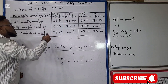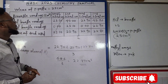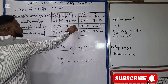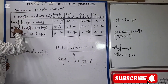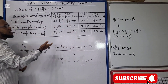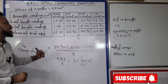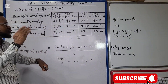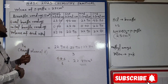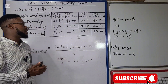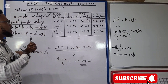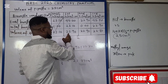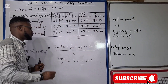For the first titration, we continue from 23.10 cm³ as the initial burette reading. The final burette reading is 45.00, so 45.00 minus 23.10 gives 22.90 cm³. We refill the burette to 0.00 and run the second titration: final burette reading 22.90 cm³, volume of acid used 22.90 cm³. The third titration gives a volume of acid used of 22.80 cm³. The results are consistent: 22.90, 22.90, and 22.80.